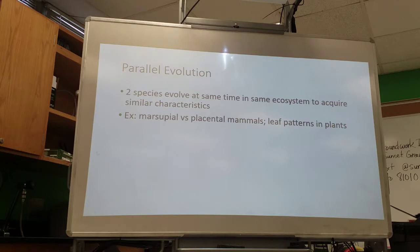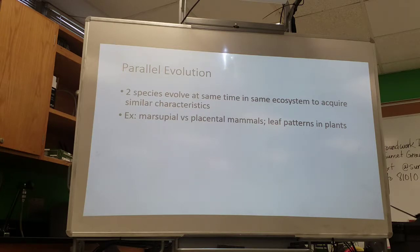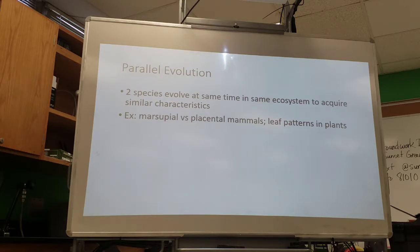Parallel evolution is a form of convergent evolution where organisms evolve in similar niches in different locations and develop similar traits. For example, marsupials mostly live in Australia while placentals live across the rest of the world. Before many species were introduced or went extinct, Australia had marsupial mammals that looked very similar to placental counterparts — a marsupial wolf, a marsupial tiger — evolving outwardly similar forms. Unfortunately, many of them are now extinct.